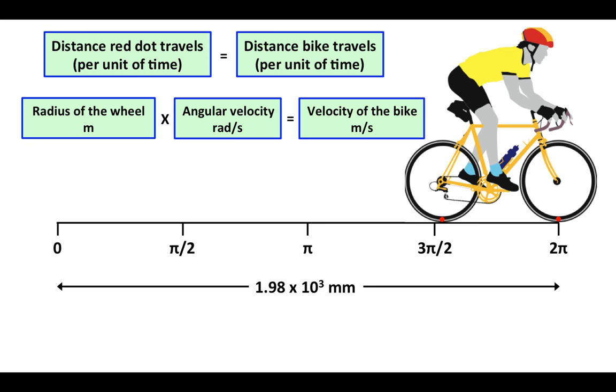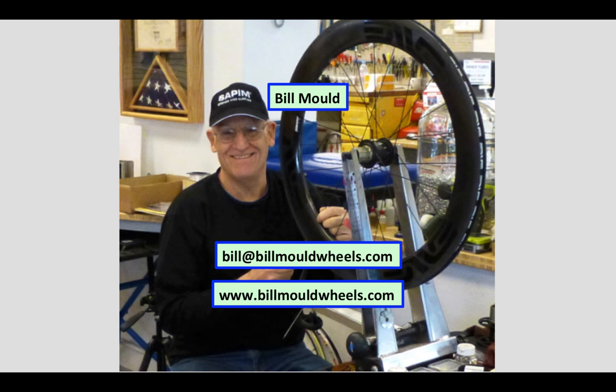The Greek letter omega is used to represent angular velocity in radians per second. If the velocity of the bike is 1.98×10³ meters per second, then the wheels will roll 1.98×10³ meters per second. The radius of the wheel times the rotational velocity of the wheel in terms of radians per second is equal to the velocity of the bike in meters per second. Here is my contact information. Thanks for watching.